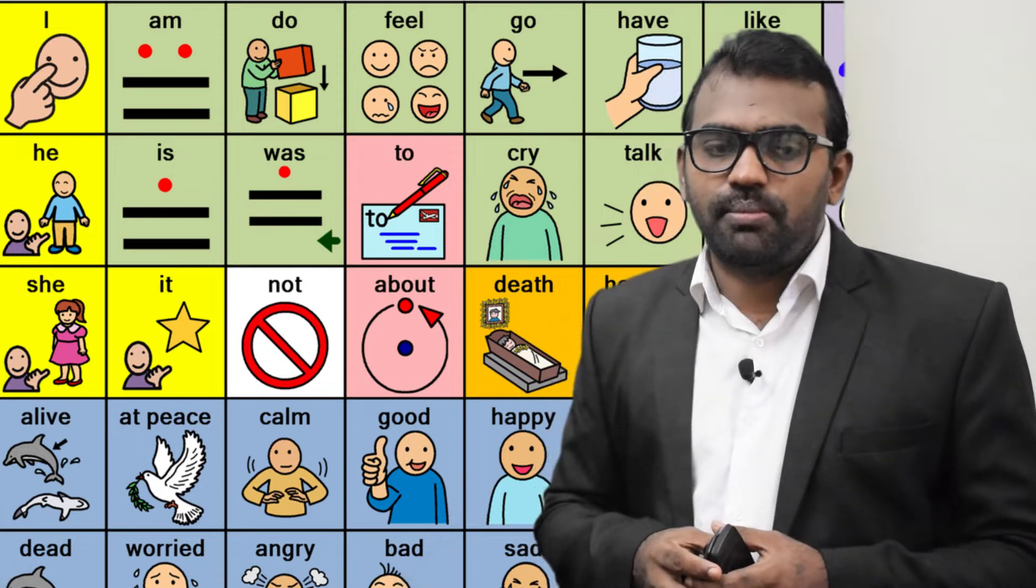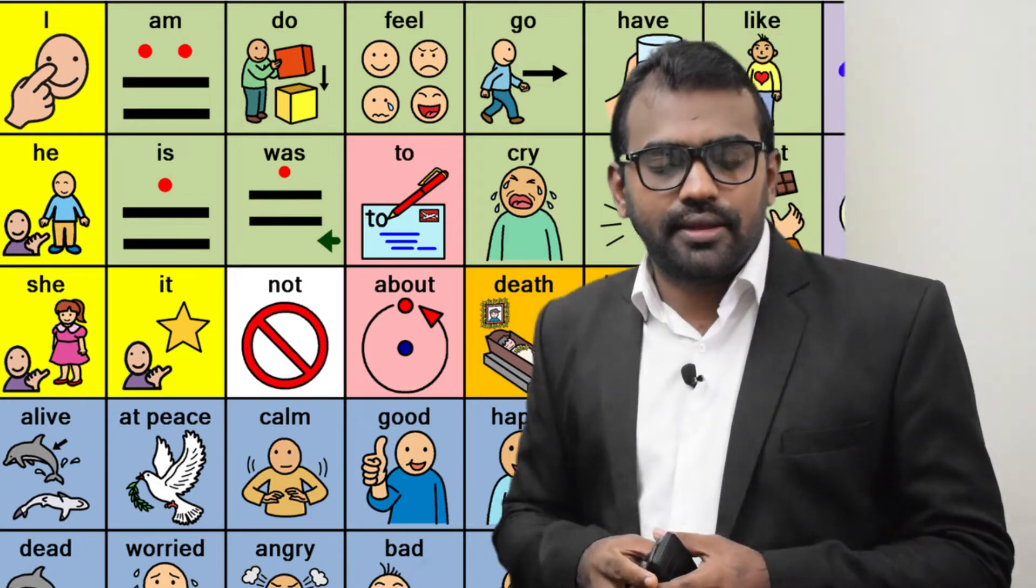There are two types of systems: unaided systems and aided systems. Unaided systems of AAC do not need anything but our own body. These include gestures, body language, facial expressions, and sign language.